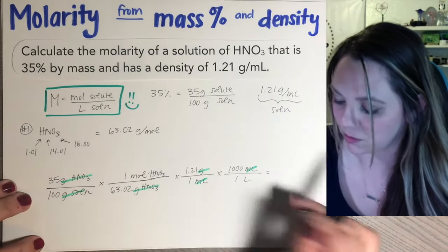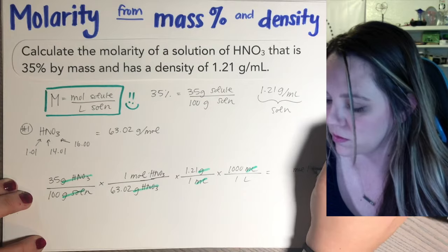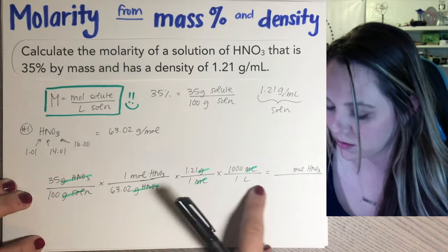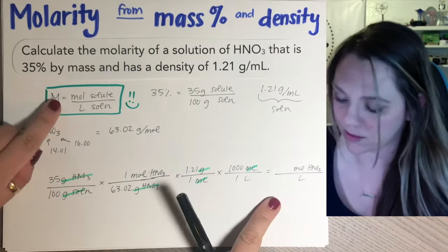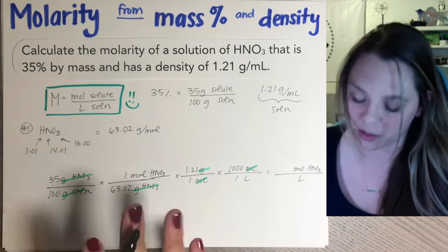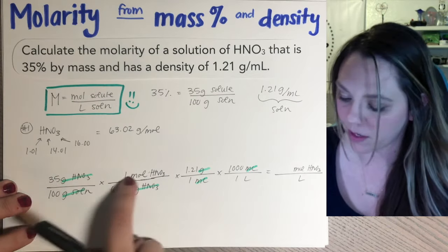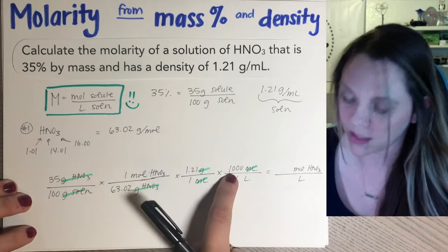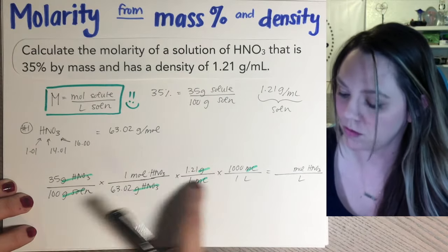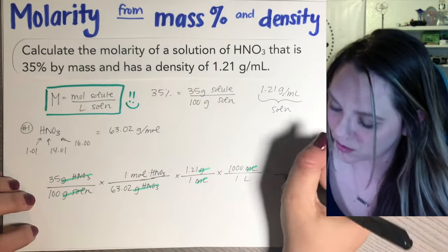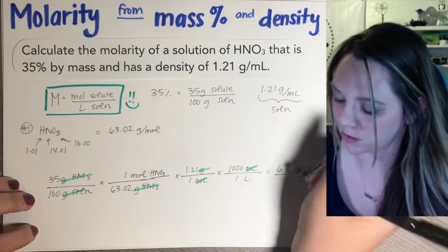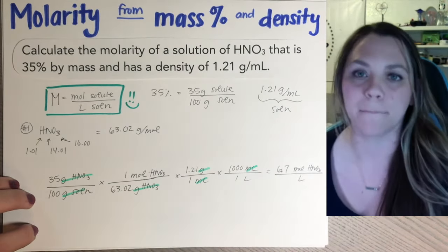And now on your numerator, you're going to get moles of HNO3. And on your denominator, the units you'll have is liters, which is exactly what you want for molarity. So you just plug in your calculator. 35 times 1.21 times a thousand divided by 100 divided by 63.02 equals, you should get 6.7 moles of HNO3 per liter.